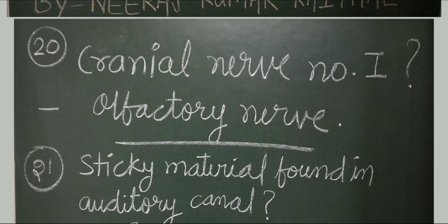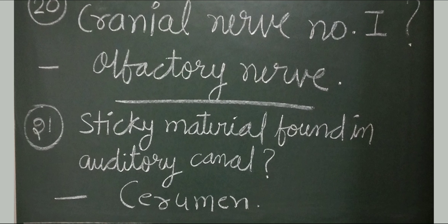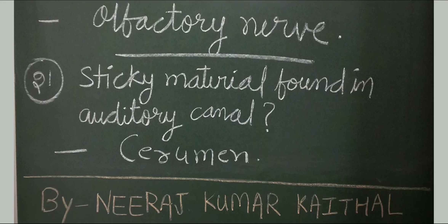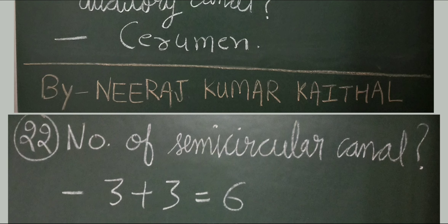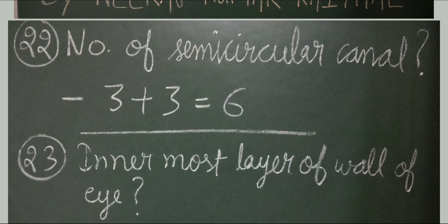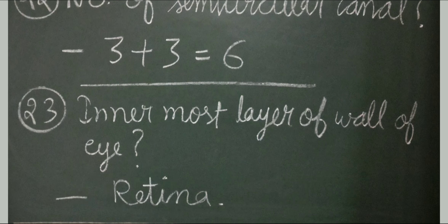Question number 21: the sticky material found in the auditory canal is known as cerumen. Question number 22: the total number of semicircular canals is 3 plus 3, equaling 6. Question number 23: innermost layer of the wall of the eye. Retina is the innermost layer of the eye.